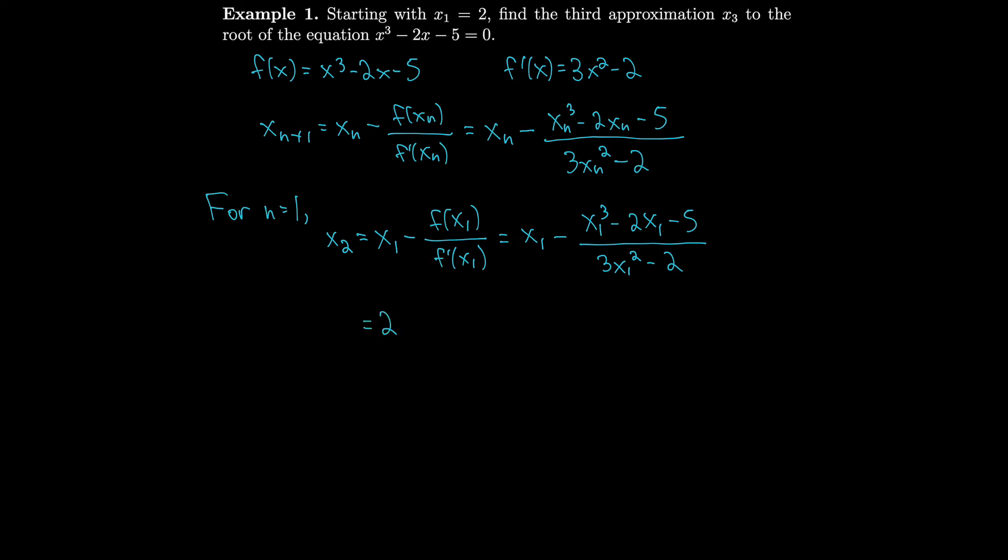So if that's our initial approximation, we plug in 2 and cube it, and then we get 2 times 2 minus 5 for our numerator and 3 times 2² - 2 for our denominator. Simplifying that, we get 2.1. This 2.1 is x₂. That's the x₂ that we started with.